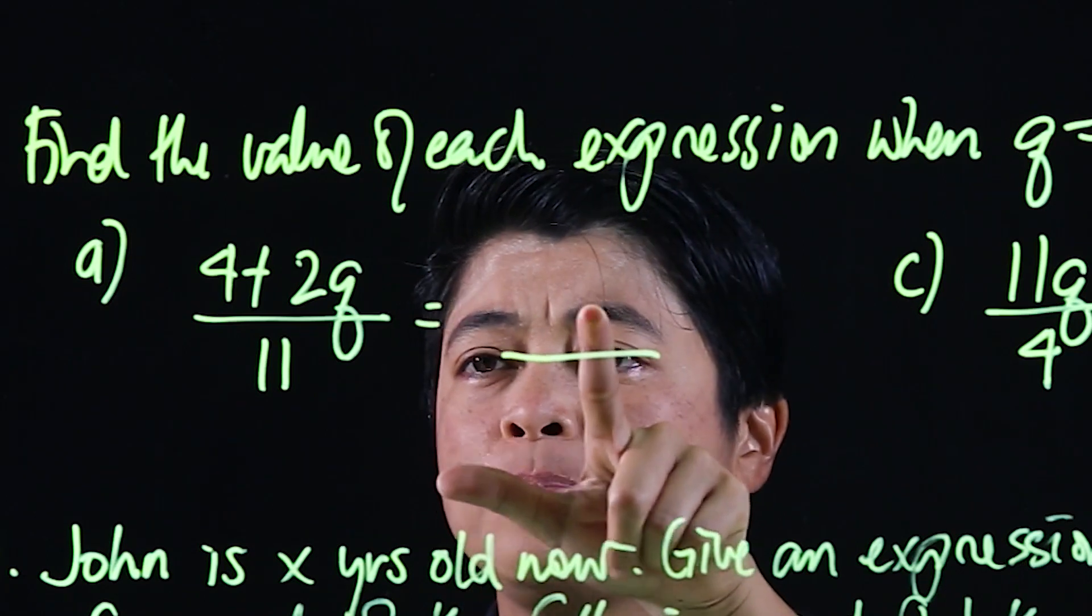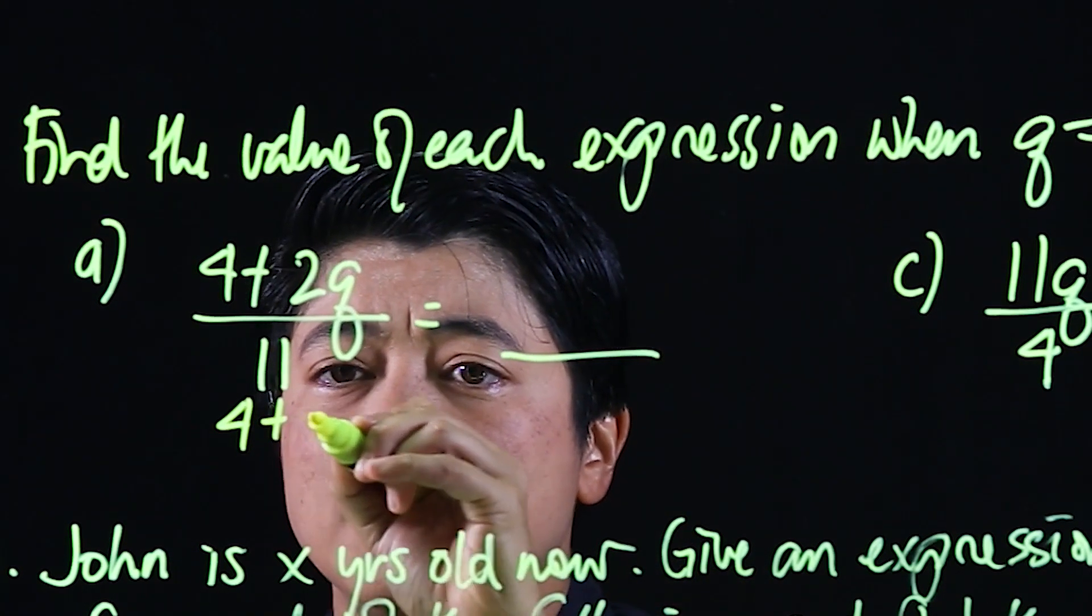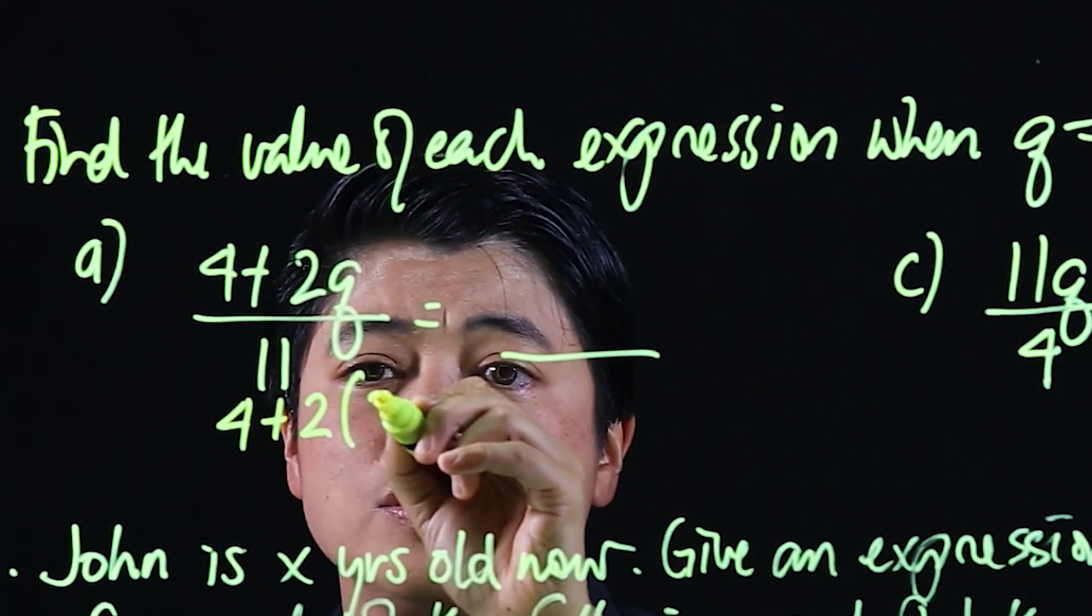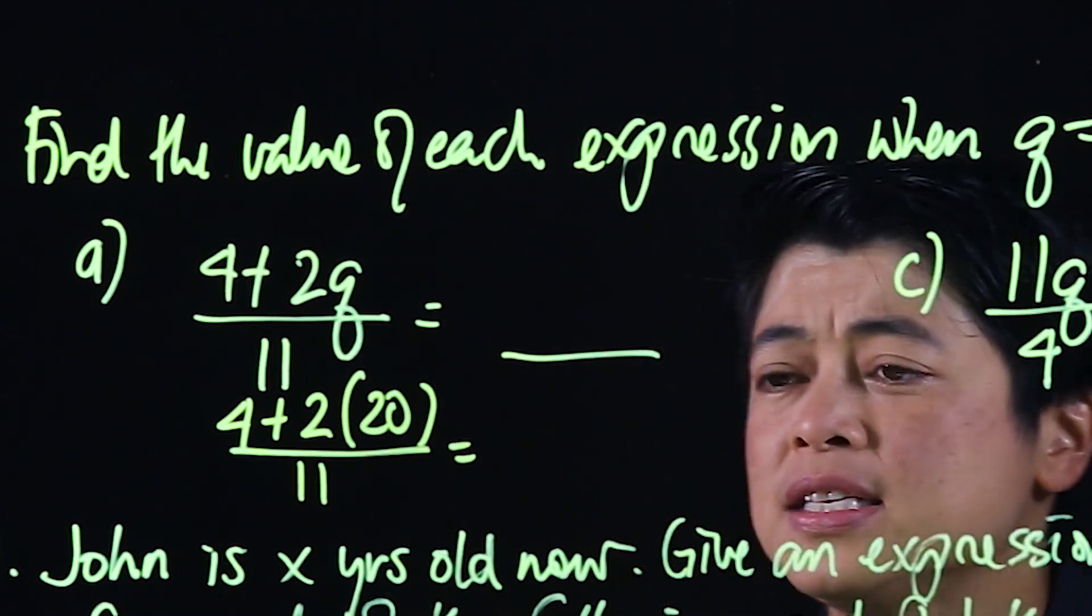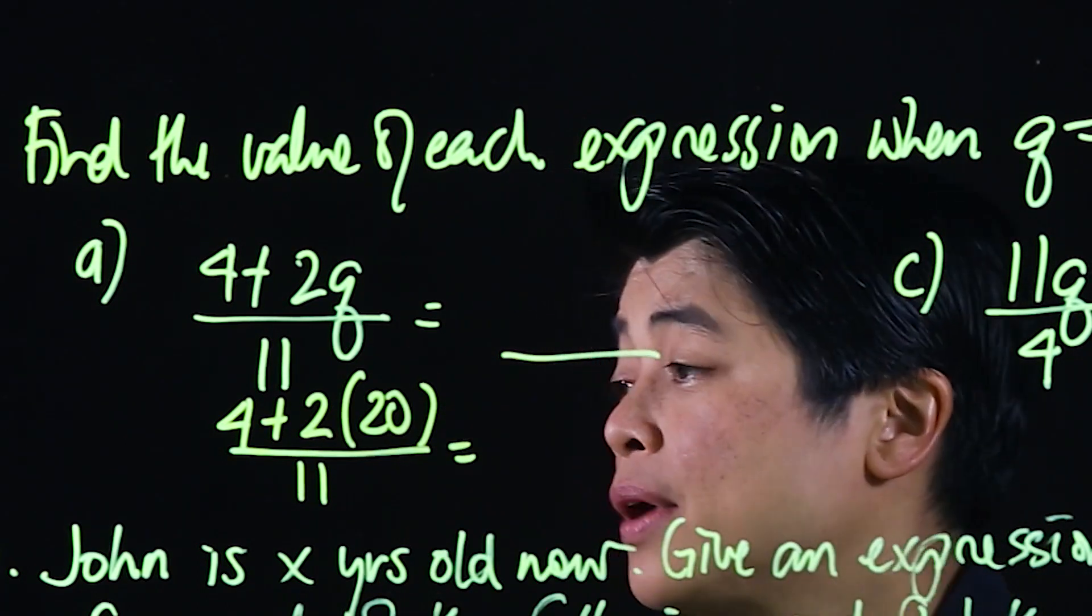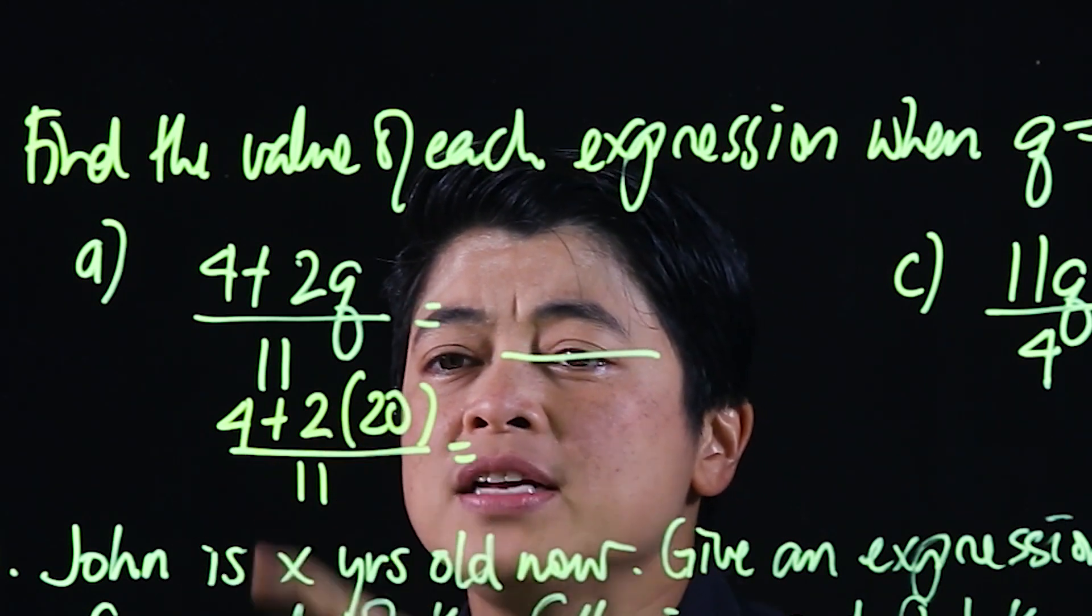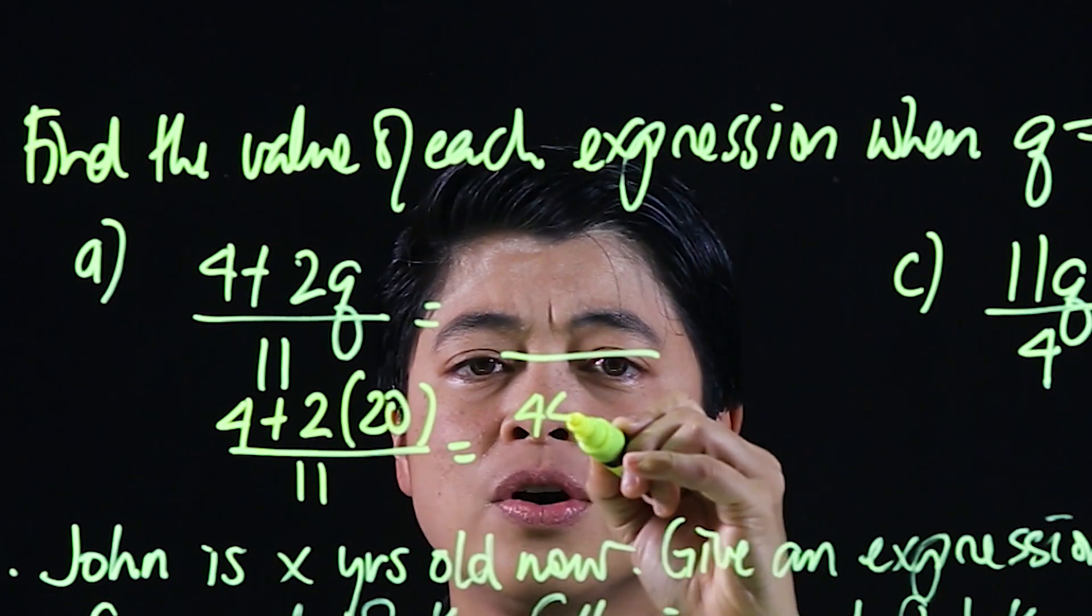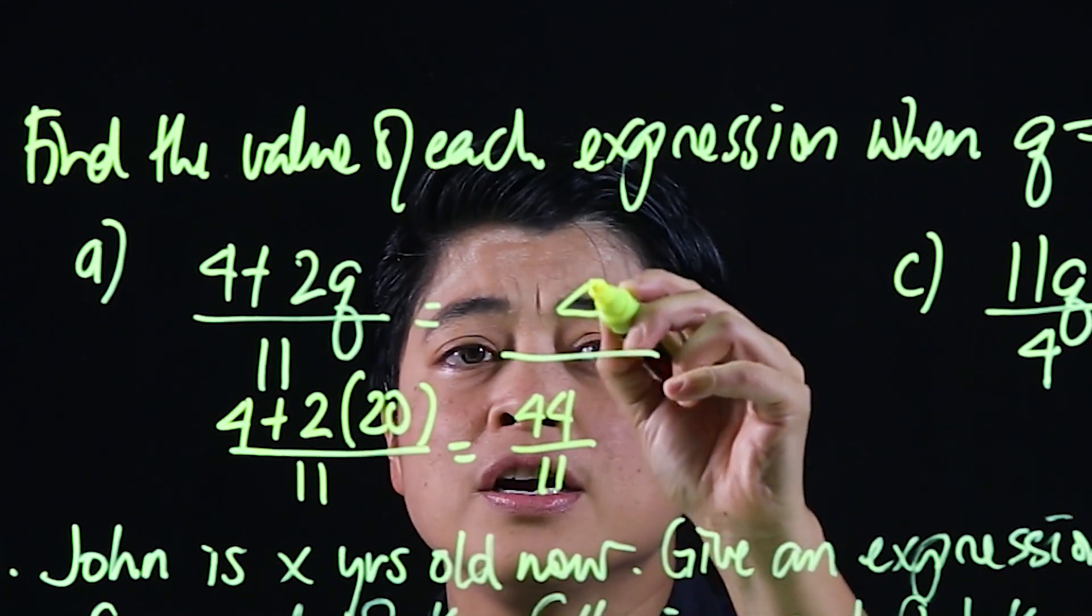So the final answer I'll put here but I'll put the workings down below. So that means 4 plus 2 times 20 over 11. So what we'll do is instead of putting an x, we'll put it in parentheses. So which means this is 40 plus 4 is 44 over 11, making our final answer 4.